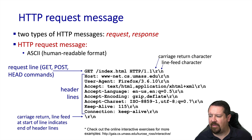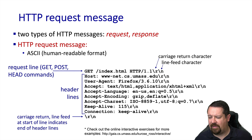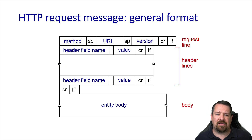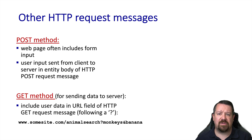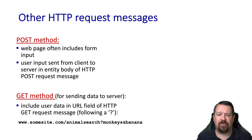The header lines tell the server a number of other things about the connection, including the name of the host that the client is trying to contact, what browser the user is using, and information about the encodings that browser is willing to accept. At the end of the header lines, an additional blank line with another carriage return newline indicates the end of the message. Another type of request message is the POST method, typically used when web pages have a form into which the user has entered information — this user input appears in the body of the message after the header lines. Another common method of sending information to the server is encoding it into the URL string of the GET request.